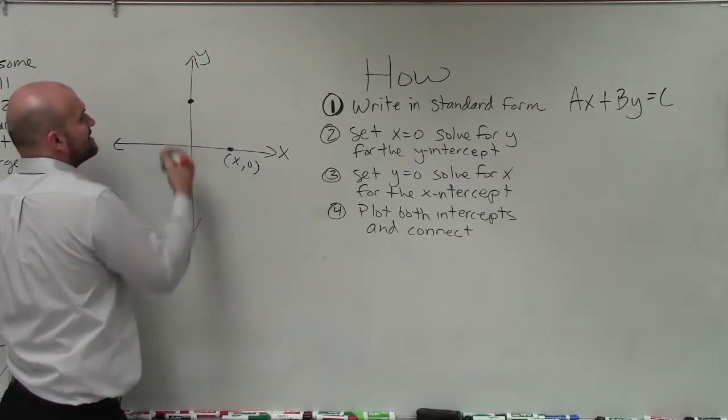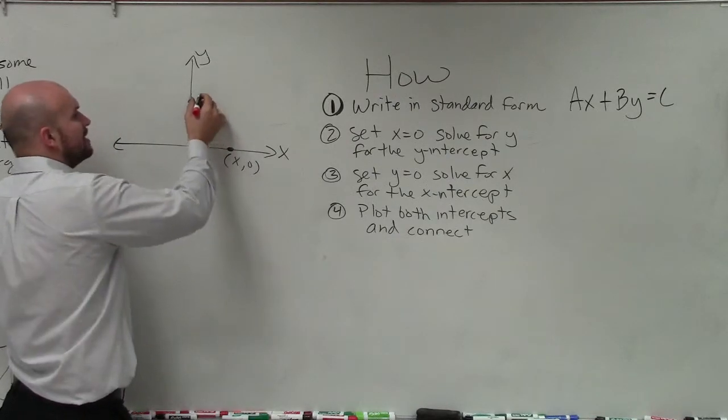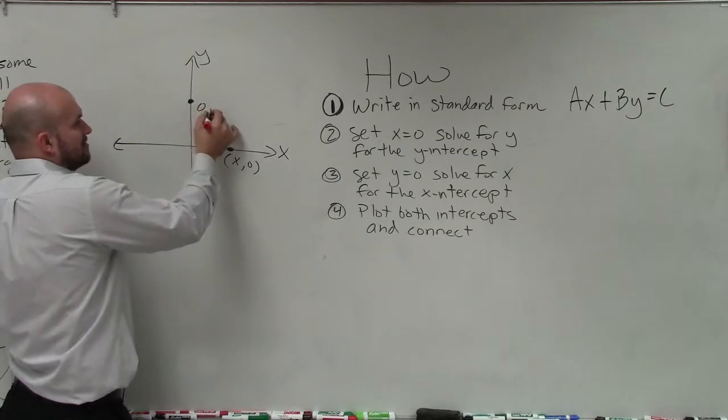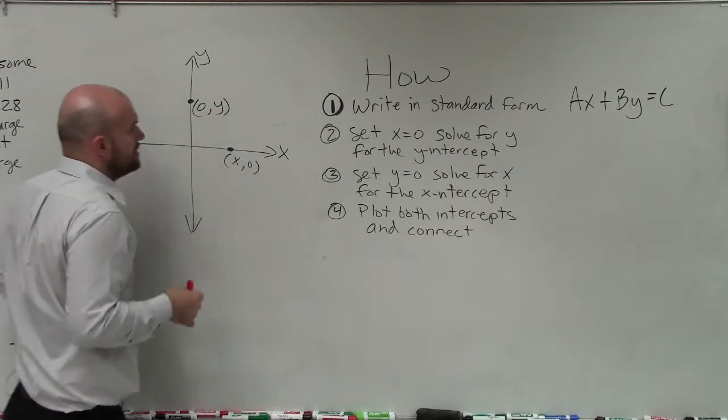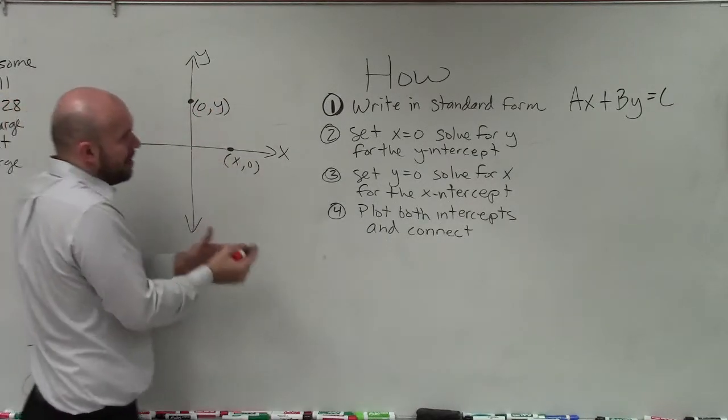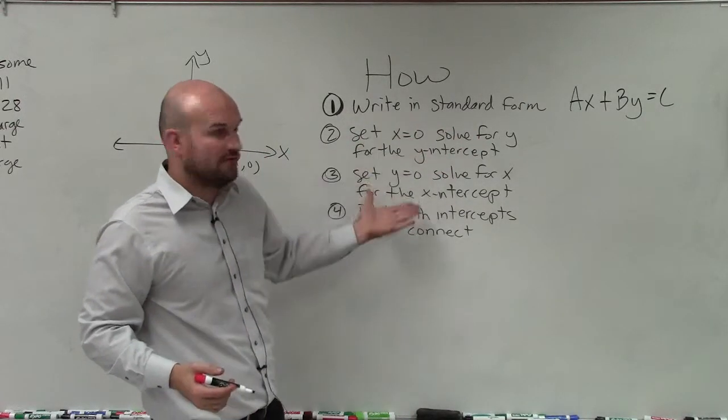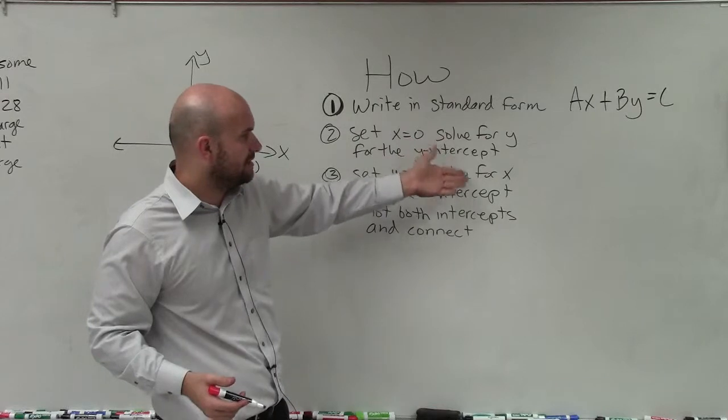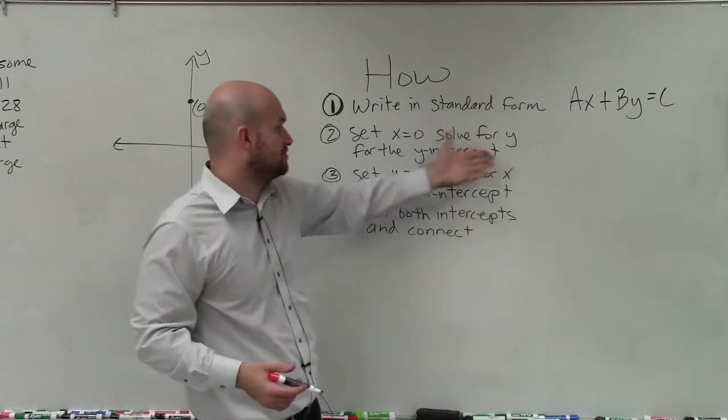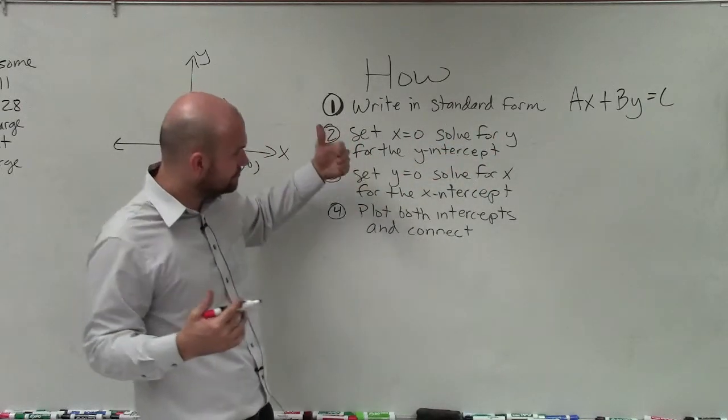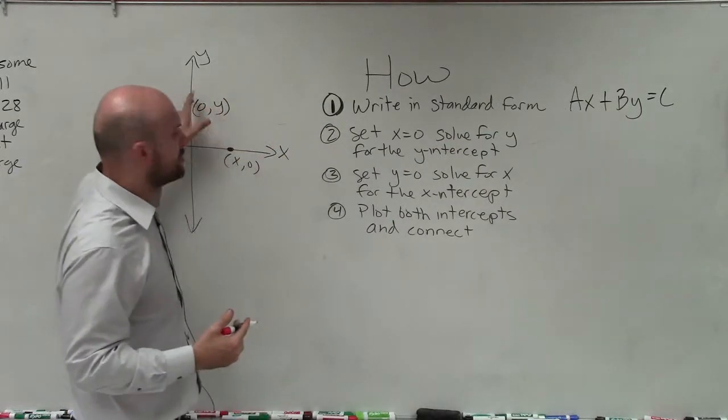Any point that lies on the y-axis, we know that the x-coordinate is always going to be 0, and we're going to have a y-coordinate. So if we want to solve for x and y, to solve for y, we just plug 0 in for x, and then solve the equation and solve for y, which will be the y-value for your y-intercept.